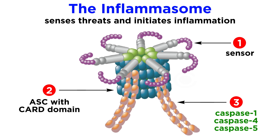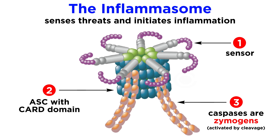Inflammatory caspases, usually caspase 1 or caspases 4 and 5 in humans, are what kick off the signaling cascade. They are zymogens, meaning they need to be cleaved to be activated, but once they are activated, they are responsible for all of the effector functions of the inflammasome, which we'll talk about in a moment.